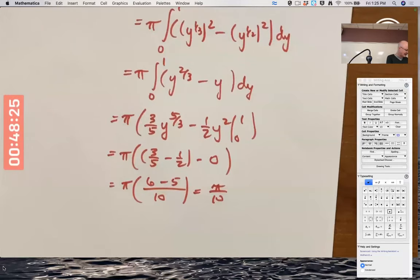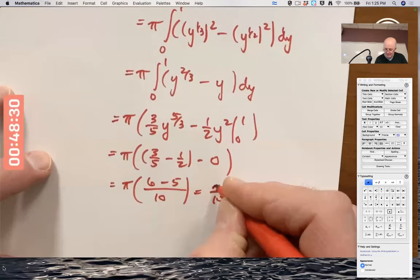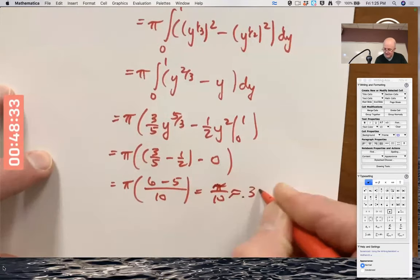Just checking with the previous section to make sure I didn't make a mistake. Yep, pi over 10. And that is about 0.314, because it's pi over 10.